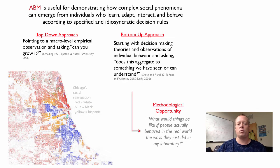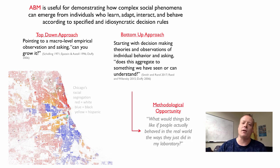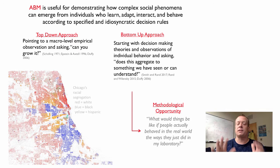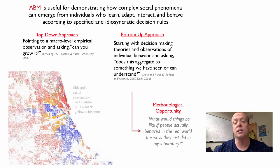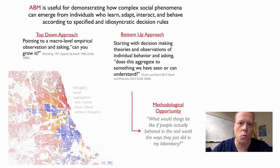So what can we do with a lab experiment result to discuss what would happen if everyone operated by that result outside of the lab? One approach would be to combine it with agent-based modeling, because we know that ABM is useful for demonstrating how complex social phenomena can emerge from individuals who learn, adapt, interact, and behave according to specific idiosyncratic decision rules. Part of the problem with agent-based modeling in general is: where do you get the decision rules?